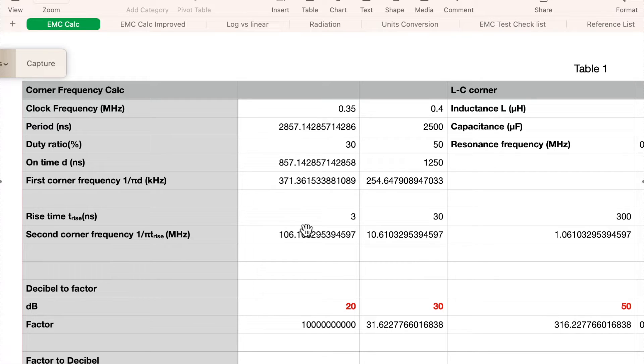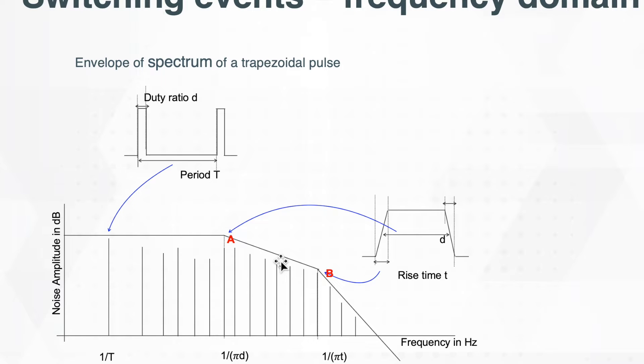We type in 3 nanoseconds, 30 nanoseconds, and 300 nanoseconds rise time, and it gives us 106 MHz, 10.6 MHz, and 1.06 MHz. This means the corner point B in previous slides.